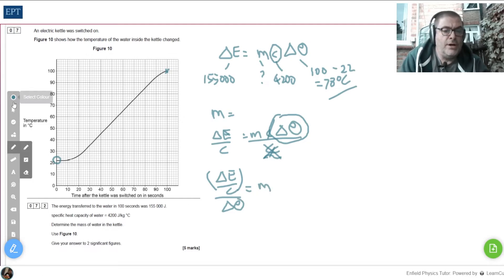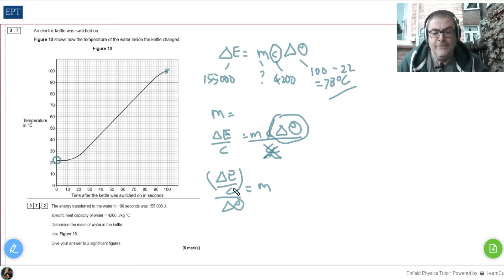Now those of you that are smart, which of course is all of you, will realize that if you have a triple decker fraction like this, I call them triple deckers, they're horrible things, but that's the same thing as moving that Δθ in this case to multiply by the C. In other words, m is going to be equal to ΔE over Δθ times C.